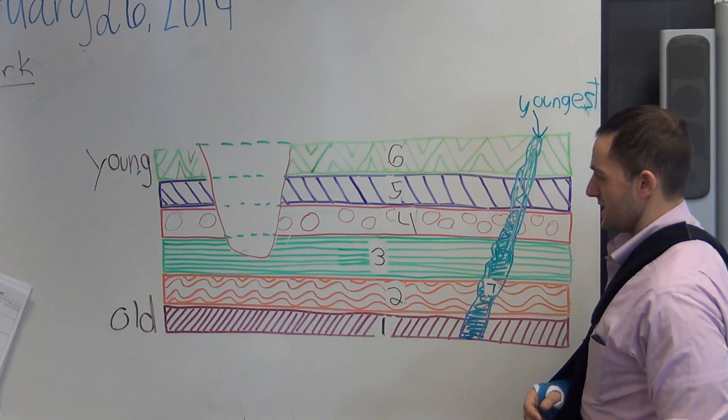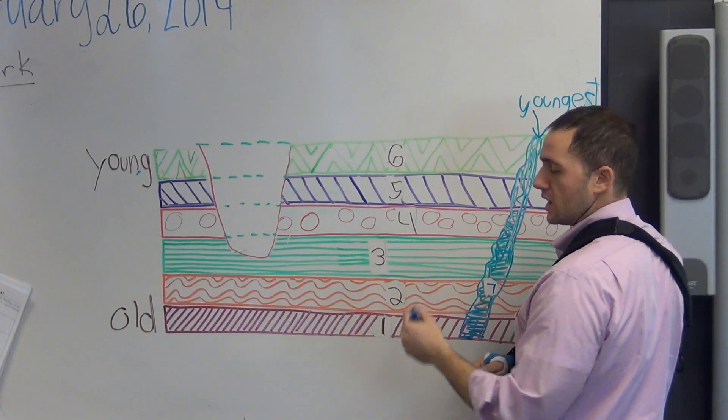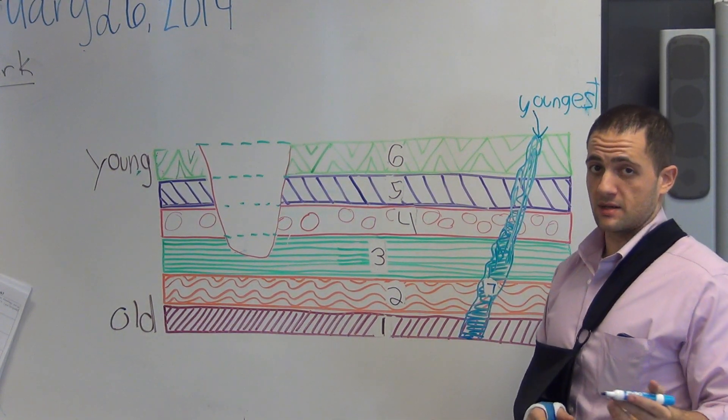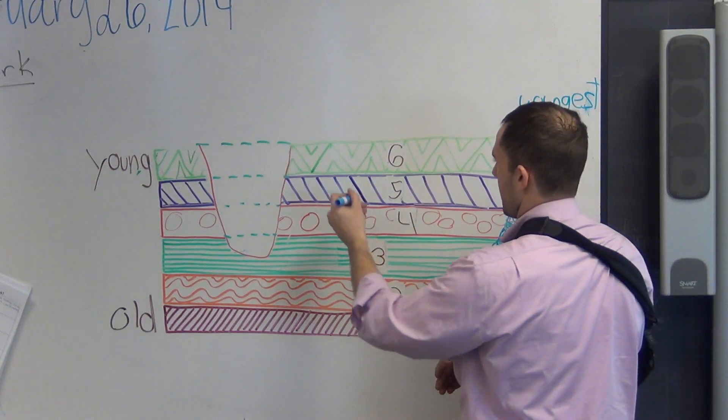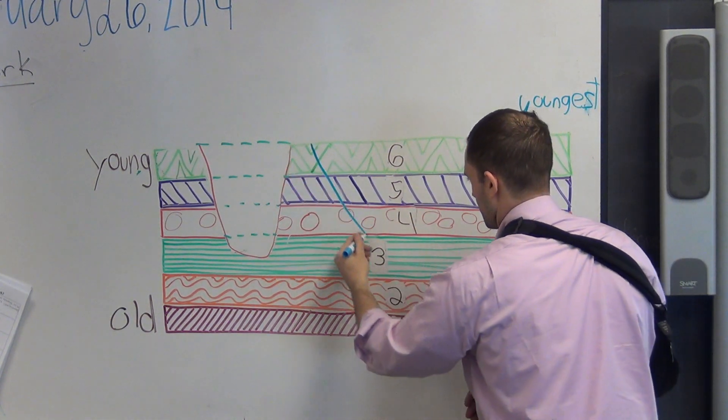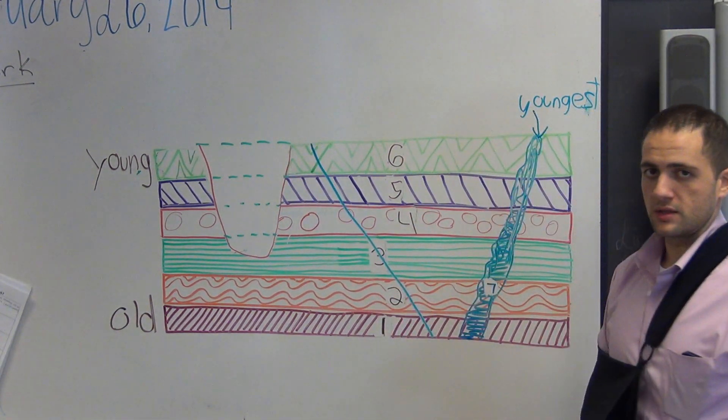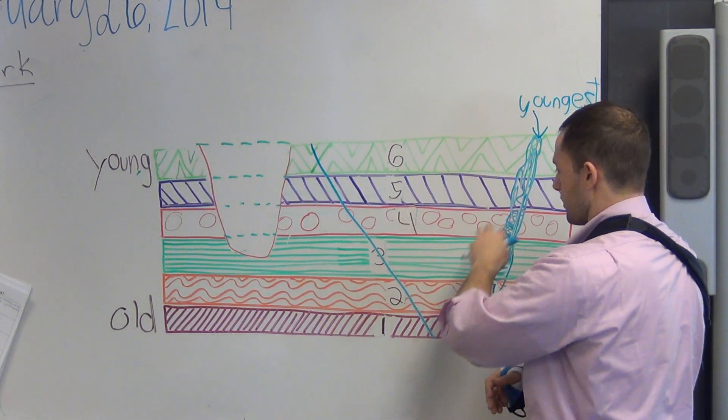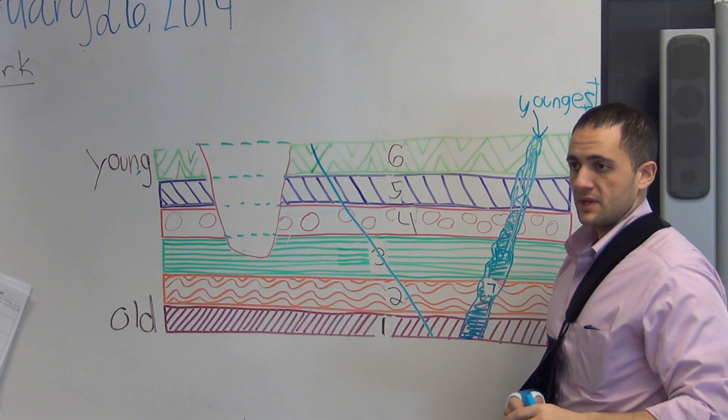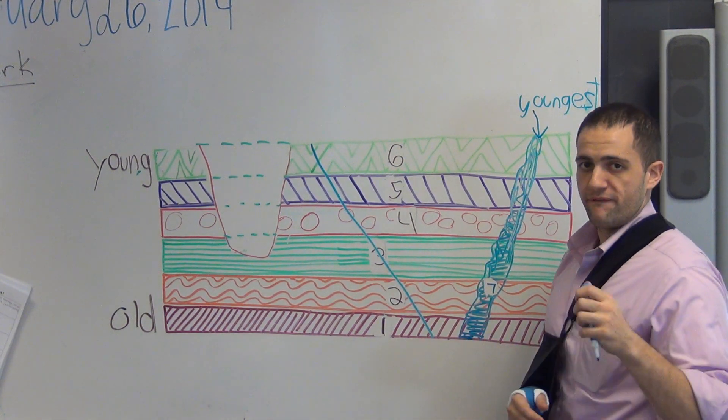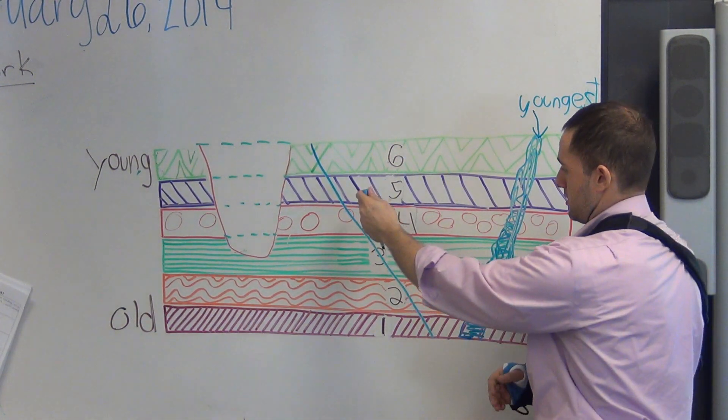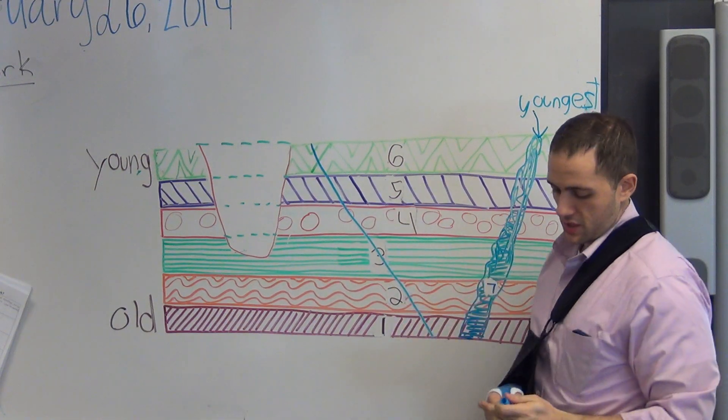Now that also goes for a fault. Sometimes we have earthquakes—some areas are very prone to earthquakes—and we get this big crack across called a fault. The layers that either one of these features goes through had to be there before. The rocks had to be there before the feature.